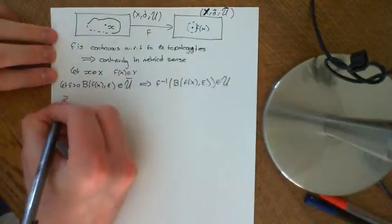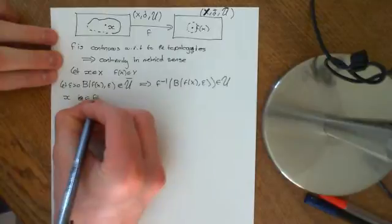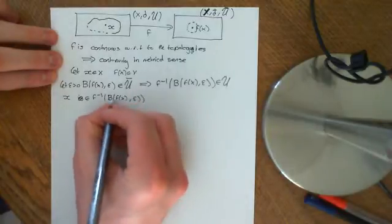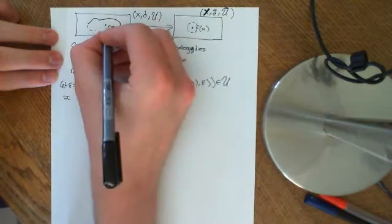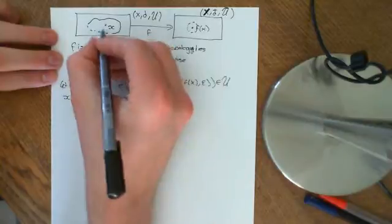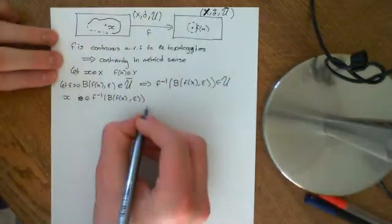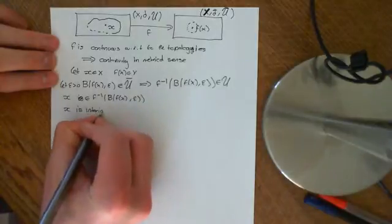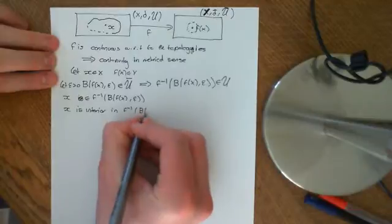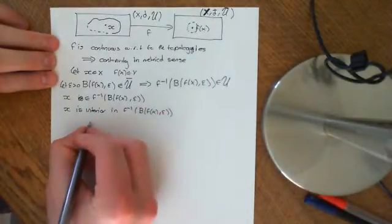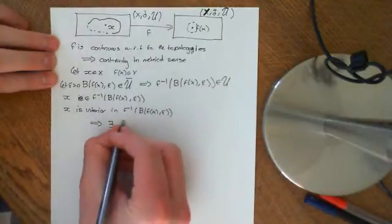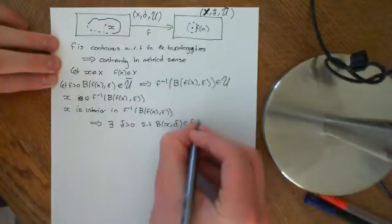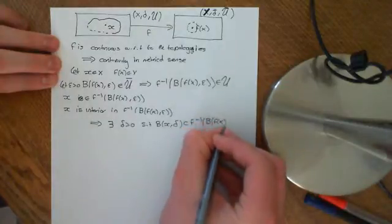Because this preimage is an open set, x is certainly an element of f-inverse of the ball centered around f(x) of radius epsilon, because within that ball is the point f(x) itself, and its inverse image contains x. It may contain more points, but it certainly contains x. And if this set is open, then x must be an interior point of f-inverse of this open ball centered at f(x) with radius epsilon.